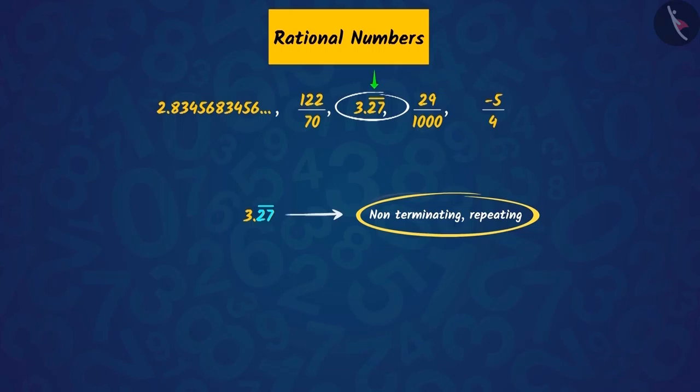So, we can say that if a number has a digit or a group of digits with this bar above them, the decimal expansion of that number is non-terminating, repeating.